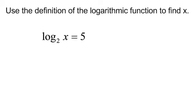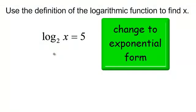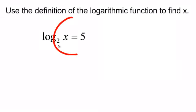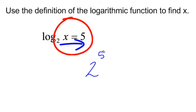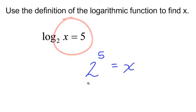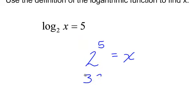New type of problem: the logarithm base 2 of x equals 5 — what is x? When I see log on one side, I change to exponential form using the loop-de-loop. This is the same as 2 to the fifth equals x. What is 2 to the fifth? That is 32, so x must equal 32.